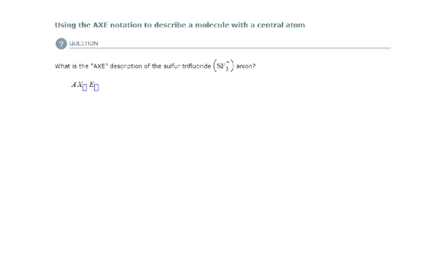Let's determine the AXE notation for sulfur trifluoride. Sulfur has six valence electrons. Fluorine has seven. There are 21 total from the fluorines, plus six from the sulfur is 27, plus an additional one. 28 valence electrons to work with.